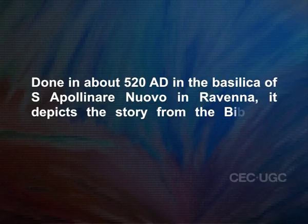Done in about 520 AD in the Basilica of Sant'Apollinare Nuovo in Ravenna, it depicts the story from the Bible in which Christ fed 5,000 people on 5 loaves and 2 fishes. But the expected large crowd in divergent postures and expressions is strikingly absent from the scene. A long-haired, beardless Christ appears in the centre with two arms stretching out in a blessing posture. Two apostles on either side offer him the loaves and fishes with which the miracle is about to be performed. The apostles conceal their hands with their robes as a gesture of reverence, as subjects offering tributes to their rulers used to do at that time.